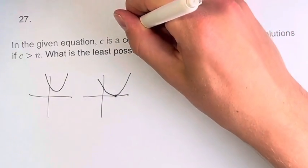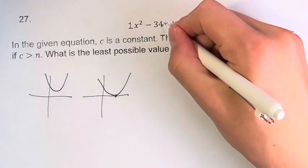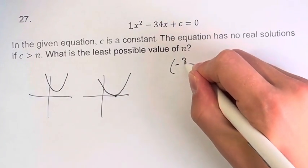Since we have a coefficient of 1 in front of the x squared, this is really easy. You just take the middle term and divide by 2.